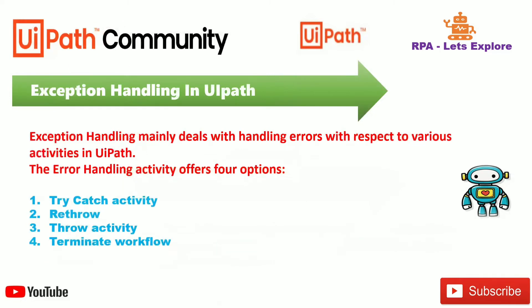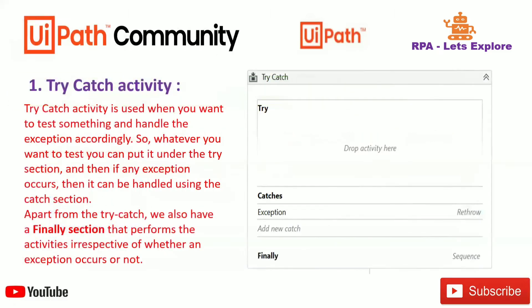What are the activities available in UiPath? Exception handling mainly deals with handling errors with respect to various activities in UiPath. There are a total of four options: try-catch block, re-throw, throw activity, and terminate workflow. We'll see them one by one.